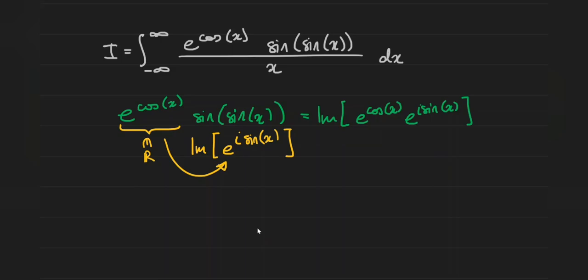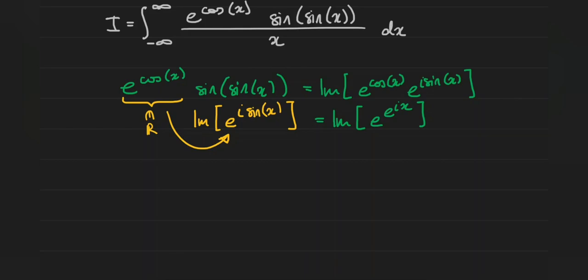We can bring those two exponentials together by adding the exponents. What exactly is cosine of x plus i times the sine of x? Well, that's just Euler's formula — e to the i times x. So in particular, this numerator simplifies to being the imaginary part of e to the e to the ix. We have this funny power tower of e's, and it turns out this is a much nicer function to work with in the complex plane than the mess we started with.